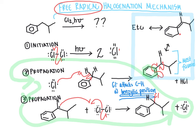The take-home message, beyond the mechanism and justifying why the benzylic position is the reactive site, is that reacting an alkyl-substituted aromatic ring with chlorine and light and heat gives benzylic substitution — one of the benzylic hydrogen atoms is replaced by a halogen. The typical halogens involved are chlorine and bromine; either one will be effective in this reaction.